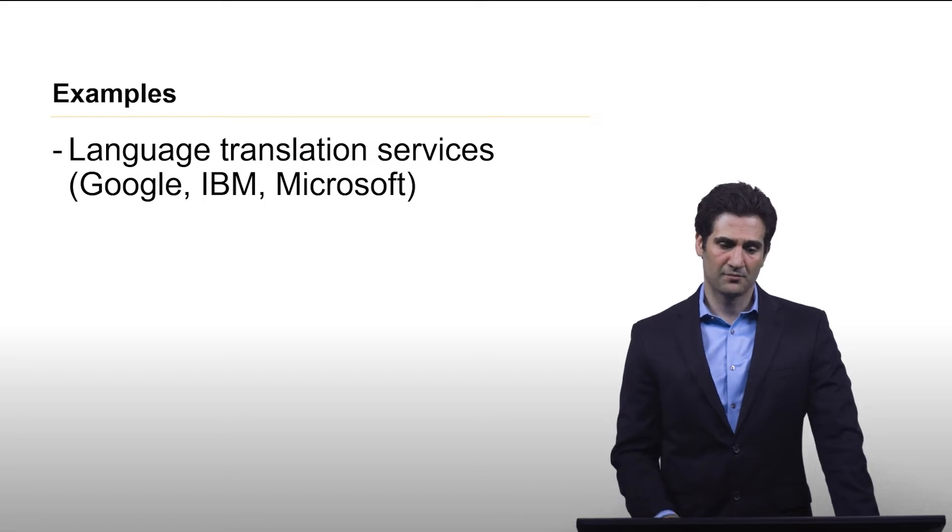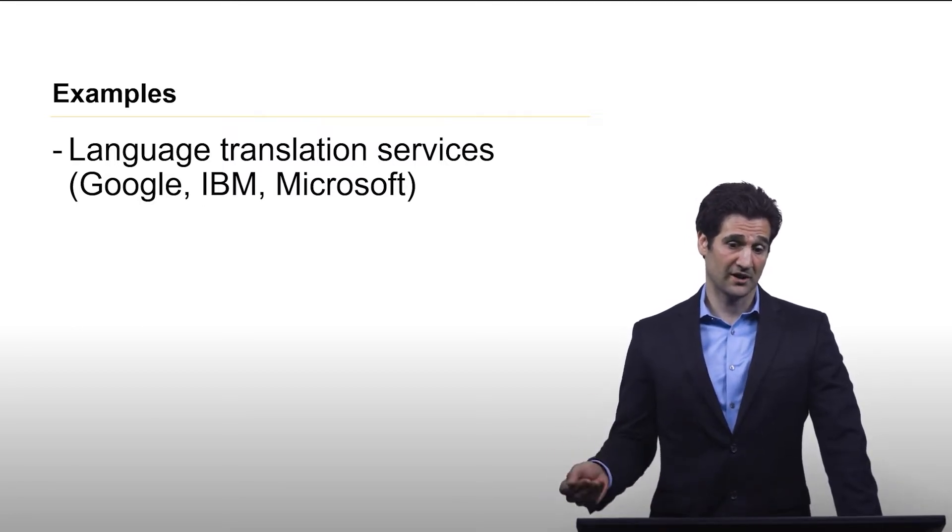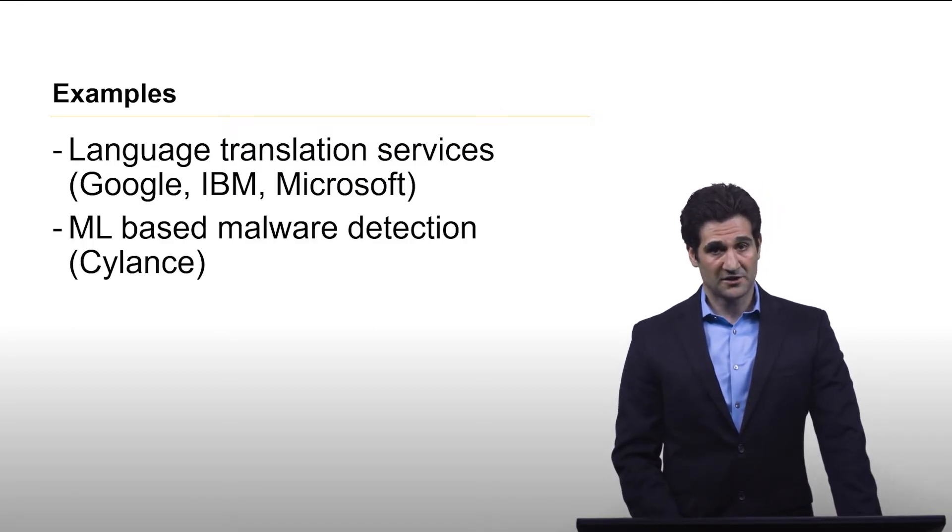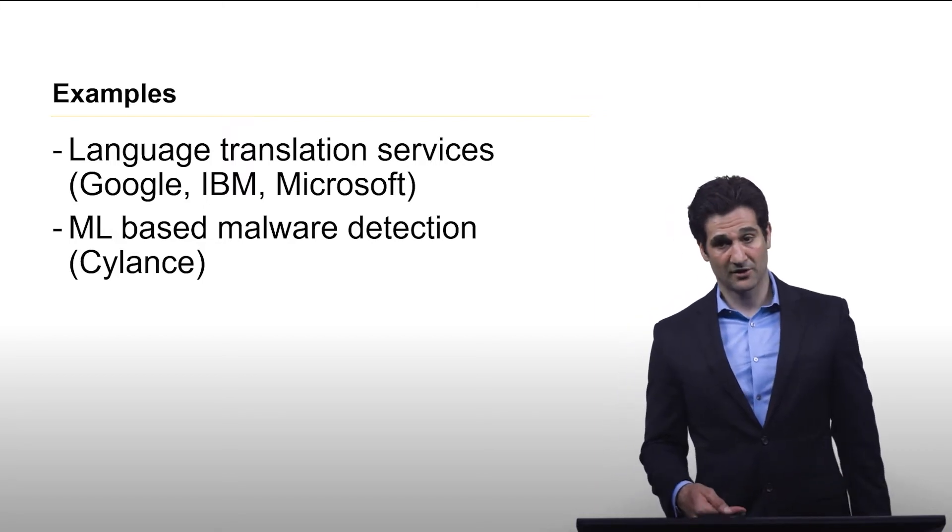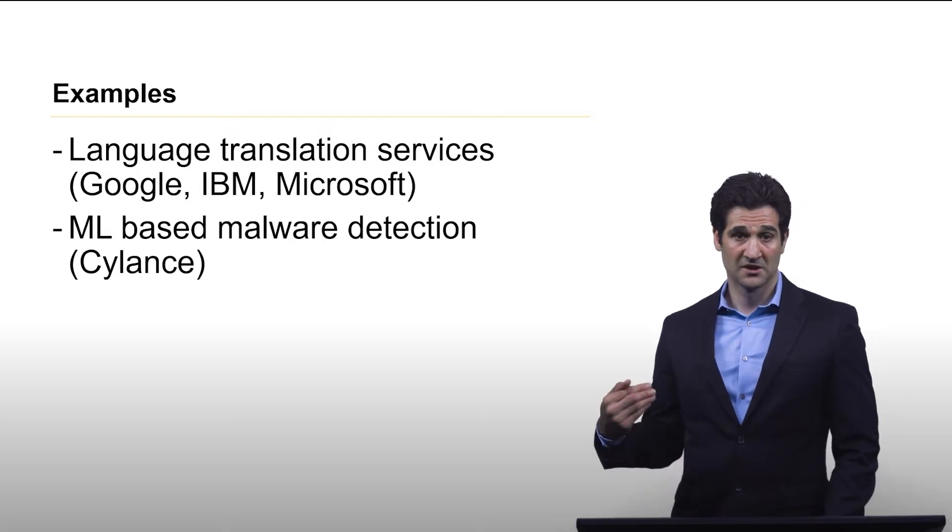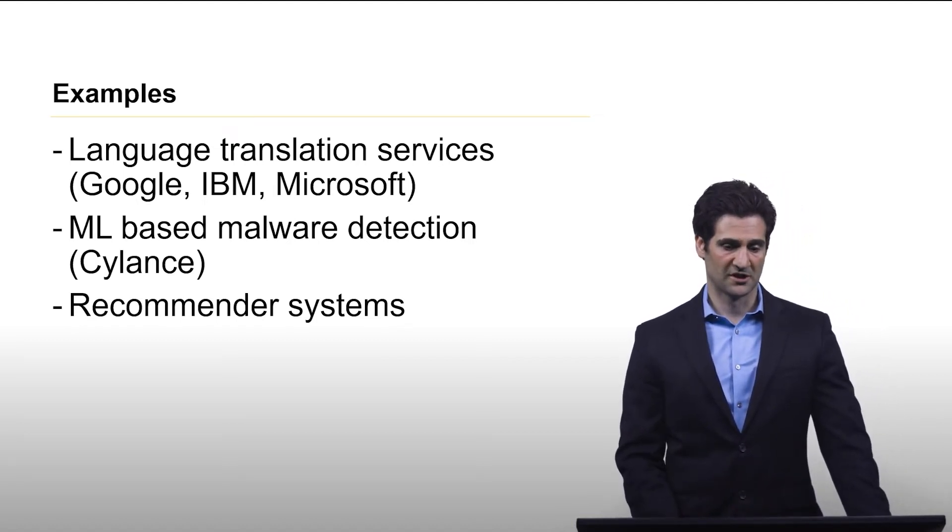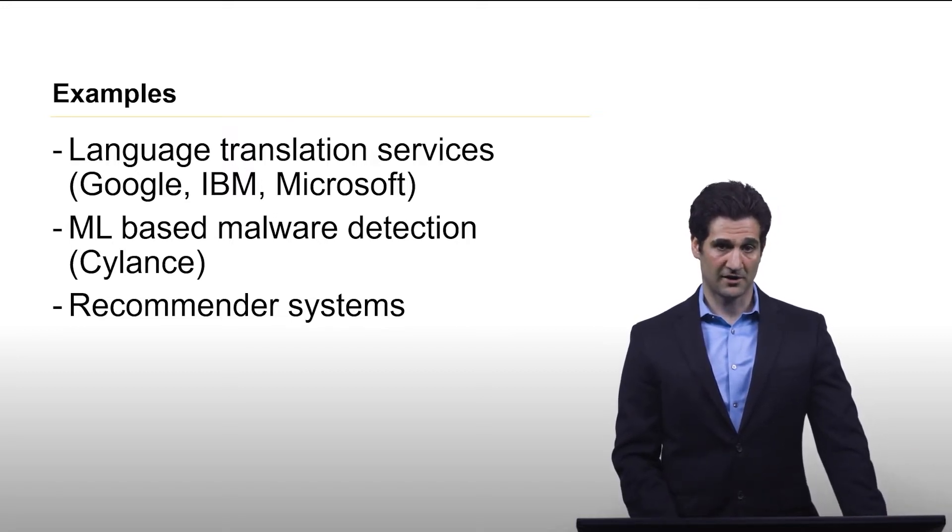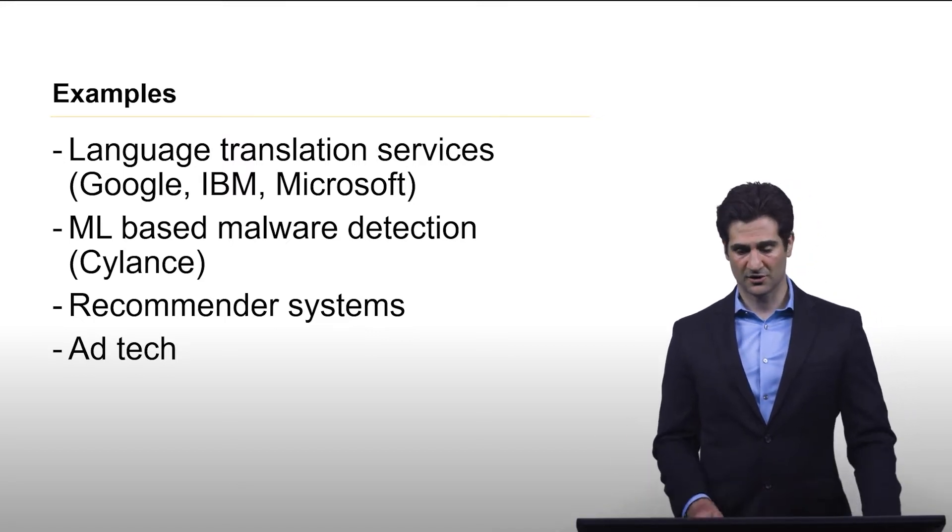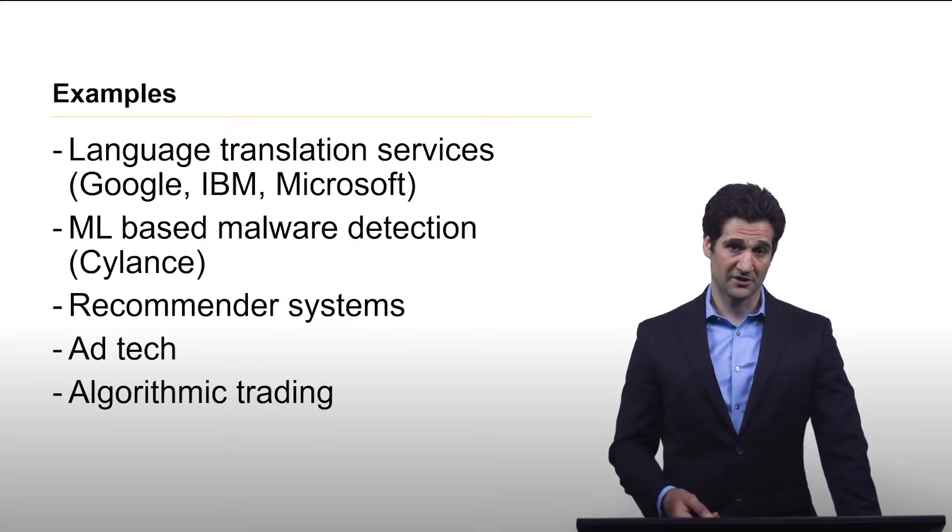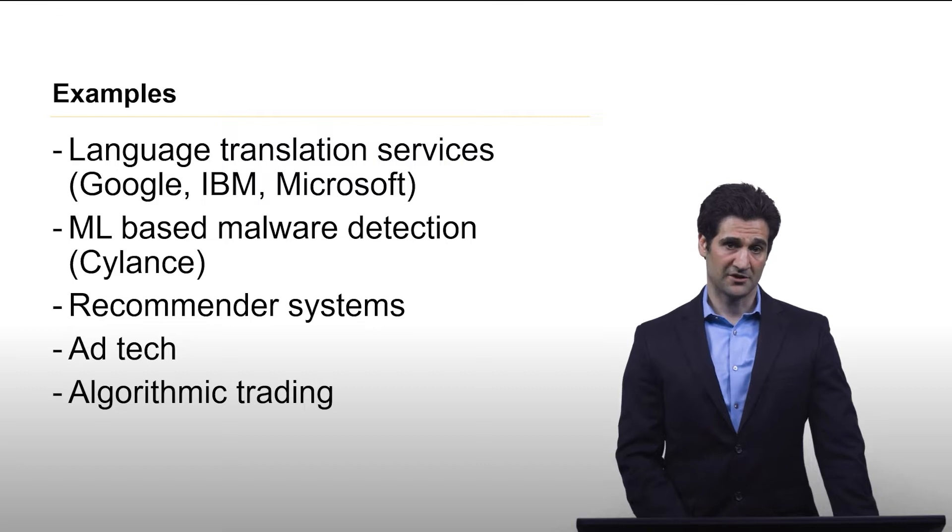And some examples of this are as follows. Language translation services, being able to constantly have, say, Google Translate up and running, ready for users to use and leverage that model. Machine learning-based malware detection, like a company called Cylance that was purchased by BlackBerry a few years back. They had the requirement where they needed to update their models on a regular basis to keep pace with the latest type of cyber attacks. Recommender systems, things and solutions such as Netflix and Amazon, providing information to users about products and movies or whatever that they may be interested in. And then, of course, ad tech, displaying appropriate ads for users in platforms like Facebook. Algorithmic trading is another example where things like regression models get used and updated in order for financial services professionals to better select stocks.